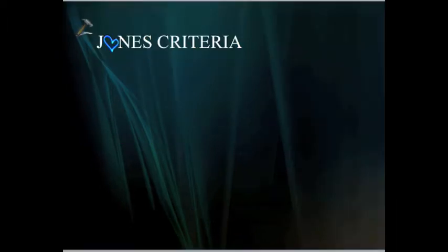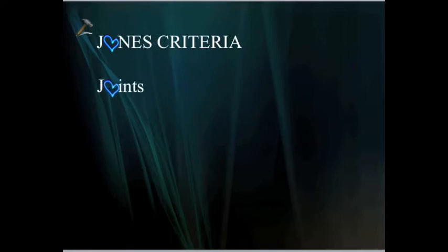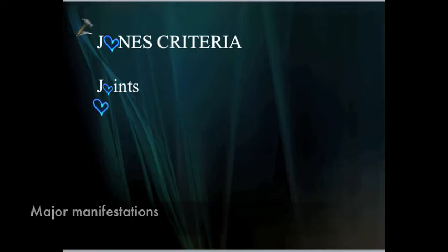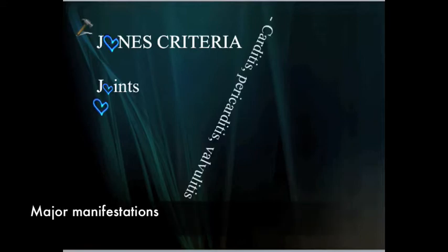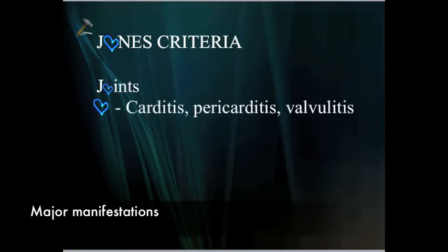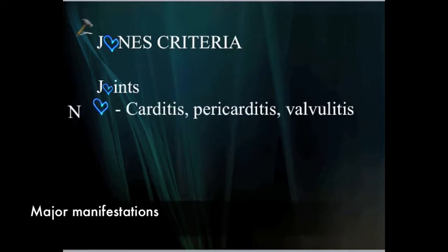Conveniently, the words 'Jones criteria' can be used as a mnemonic. The J stands for joints — this is a migratory polyarthritis affecting the large joints. The O can either stand for 'obvious,' because the heart is the obvious organ we're talking about, or can be thought of as looking like a heart. It causes a pancarditis and numerous other sequelae.